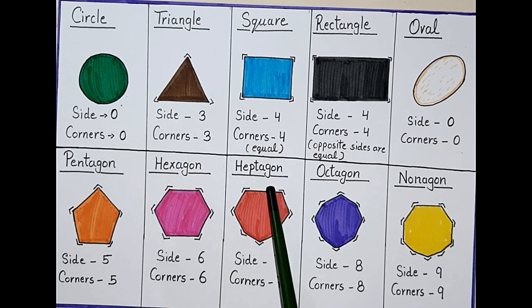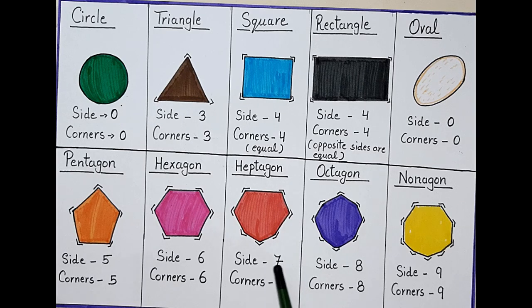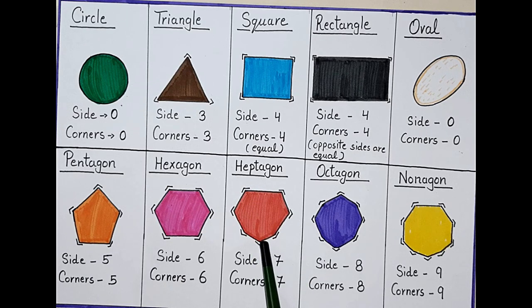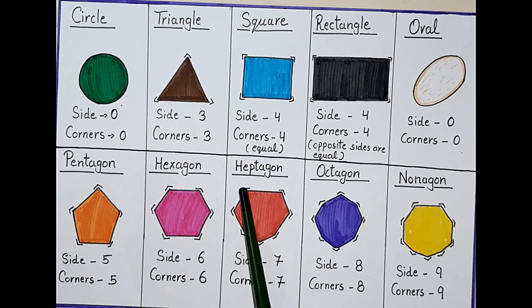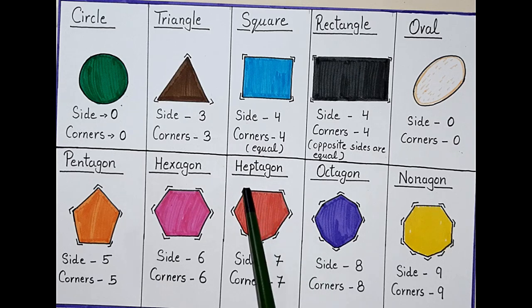A heptagon has 7 sides and 7 corners. 7 sides: 1, 2, 3, 4, 5, 6, 7.